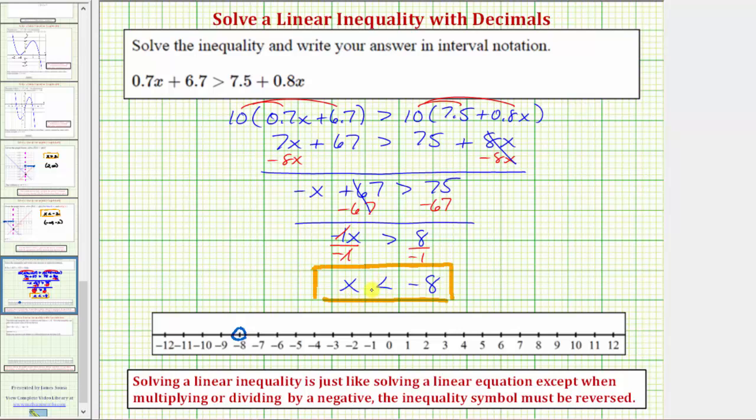Because it says x is less than negative eight, not less than or equal to negative eight. And then values less than negative eight are to the left. So this is the graph of our solution.